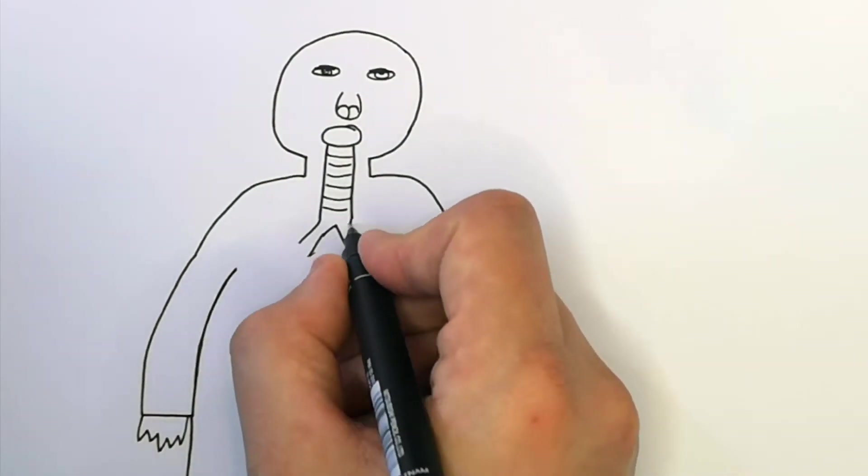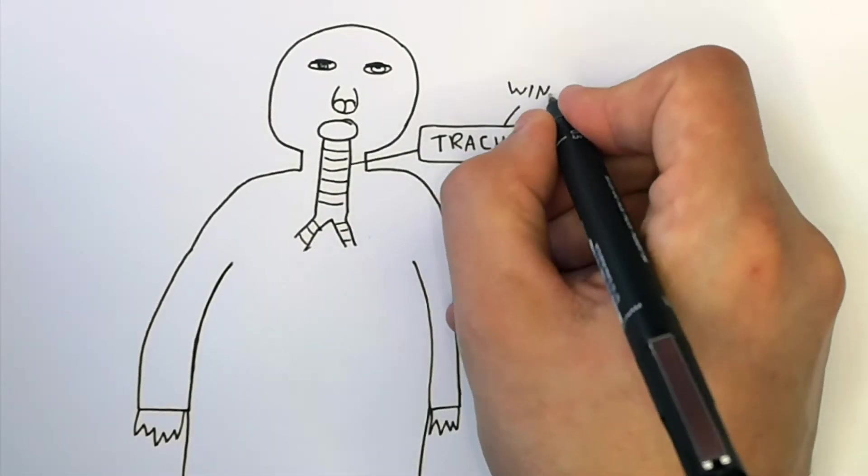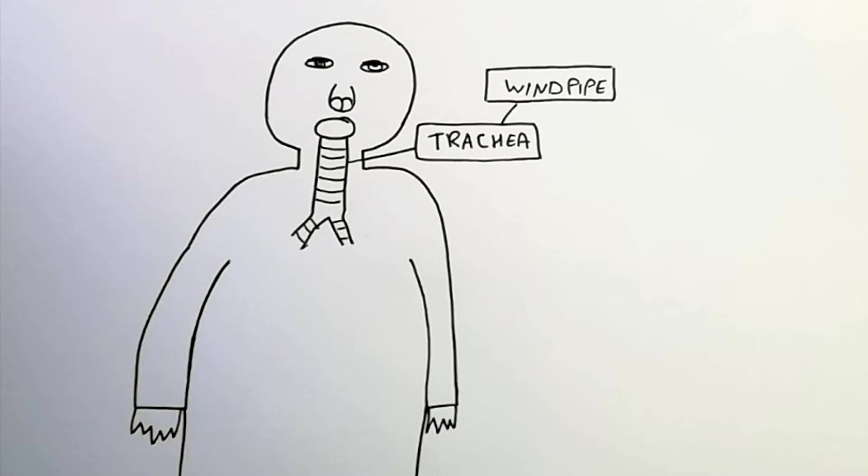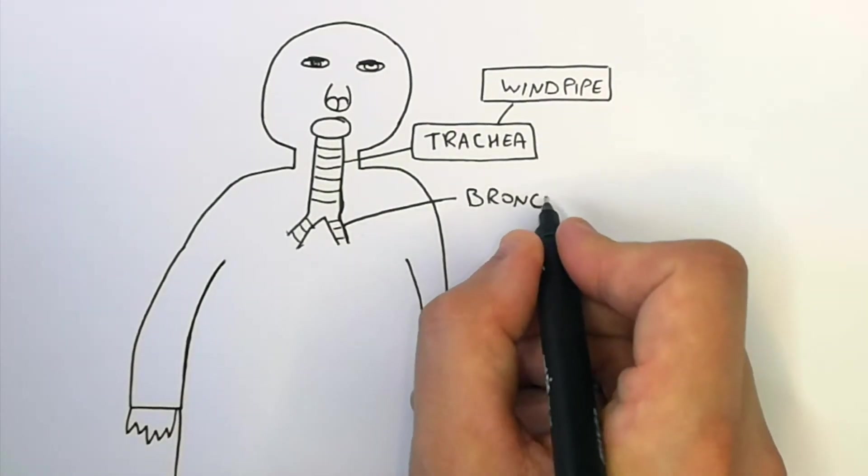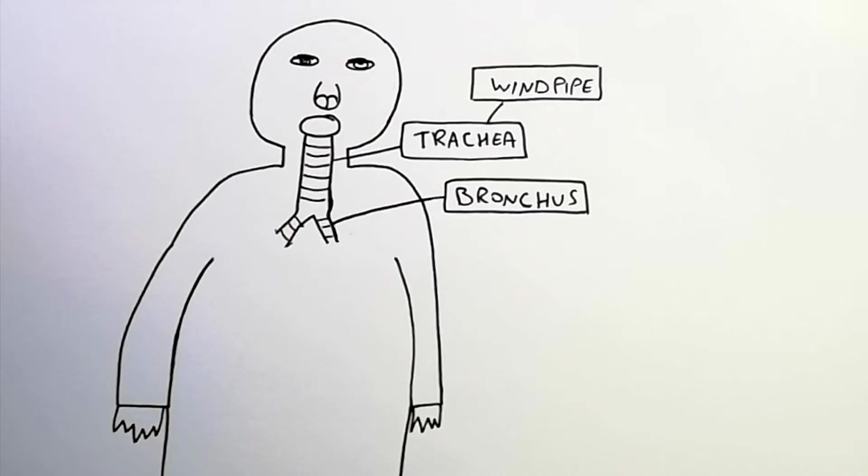This here is the trachea. The trachea, otherwise known as the windpipe, connects the mouth and the nose to the bronchus. Bronchus is singular, but we've got two bronchi. Two bronchi, that is the plural.